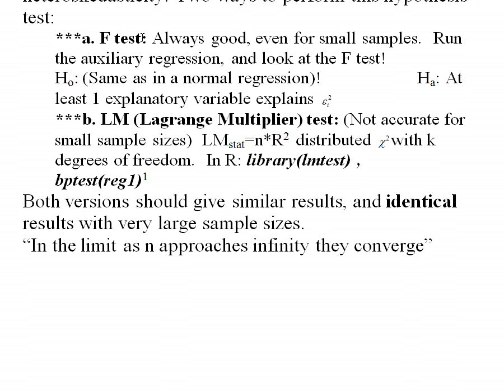If that standard F-test for that regression is statistically significant, then that tells you that at least one of those explanatory variables does explain the squared residuals — the variance of the residuals. Another way that people will sometimes do this test is with a Lagrange multiplier test, a chi-squared test where you take n, your number of observations, times R-squared from that auxiliary regression of residuals squared explained with your explanatory variables.